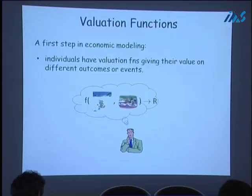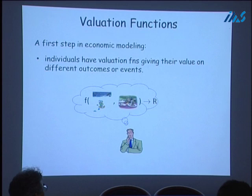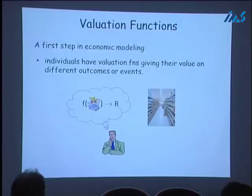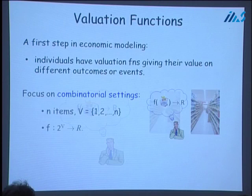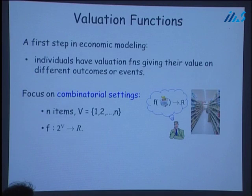A first step in economic modeling is to model individuals as having evaluation functions that describe how much value they place on different outcomes or events. For example, this can be their value on a vacation package in Switzerland or their value on a set of items in a shopping list for a supermarket. In this talk, I'll be focusing on combinatorial settings where we assume that we have a set of N items.